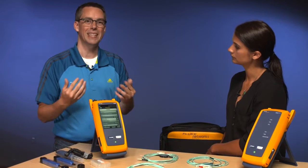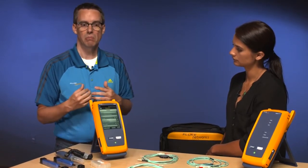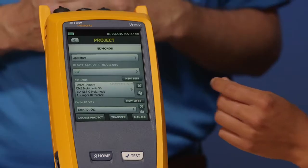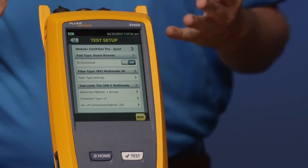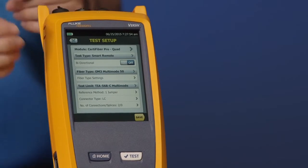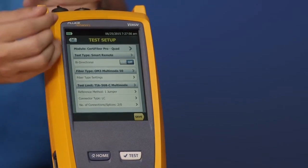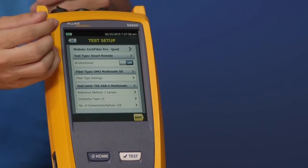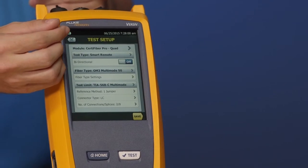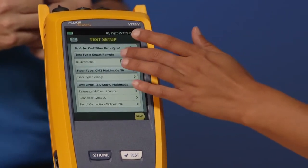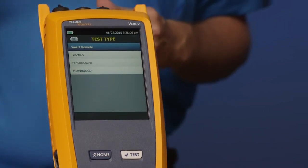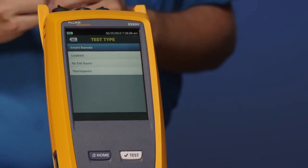So to change our test setup, let's tap where it says Smart Remote. Here now we see the basic setup configuration in our instrument. Looking at the instrument here, we see that we're using a CertiFiber Pro module. And the next thing we've got down here is our test type. Go ahead and tap test type for me, Amanda. And you get four test types here. So you can use this tester in different modes.